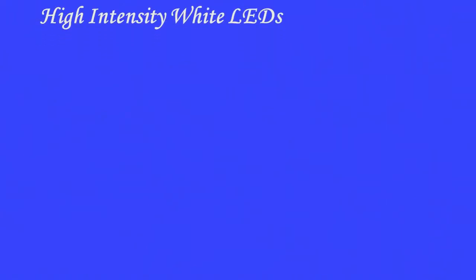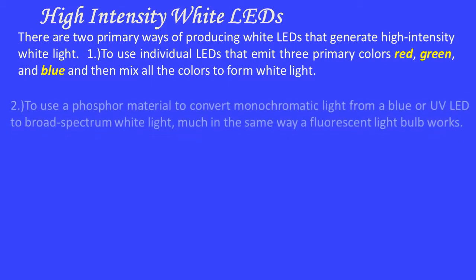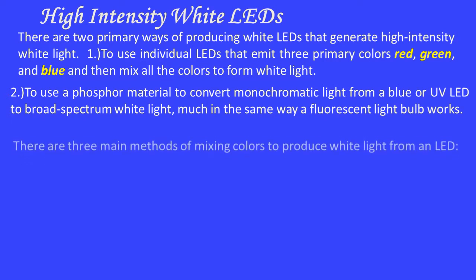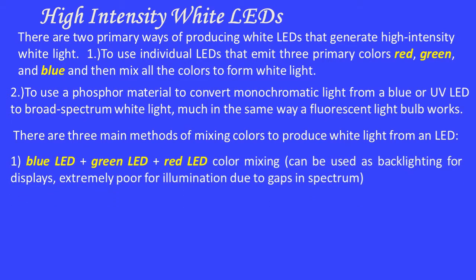There are two primary ways of producing high-intensity white LEDs. One is to use individual LEDs that emit three primary colors — red, green, and blue — and mix all the colors to form white light. The second is to use a phosphor material to convert monochromatic light from a blue or ultraviolet LED to broad-spectrum white light, much in the same way a fluorescent light bulb works. There are three main methods of mixing colors: blue LED plus green LED plus red LED color mixing, used as backlighting for displays but poor for illumination due to gaps in the spectrum.